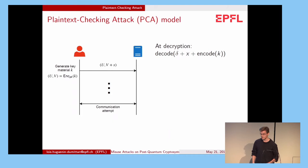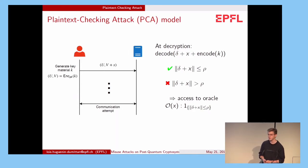So more formally, the server at decryption will compute the decode of delta plus the value X plus the encoding of the key material. This means that if the communication attempt is successful, the norm of delta plus X is smaller or equal than rho. Otherwise, the norm of delta plus X is bigger than rho. For the adversary, this is the same as having access to some oracle which returns whether the norm of delta plus X is smaller or equal than rho or not.